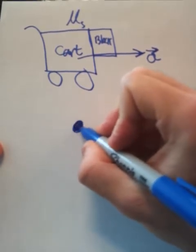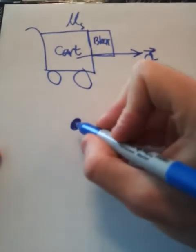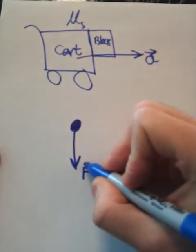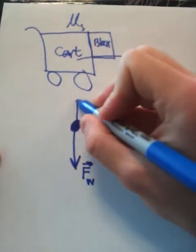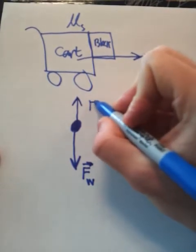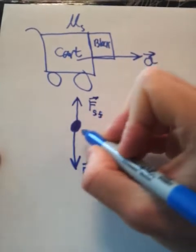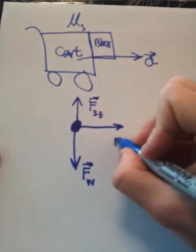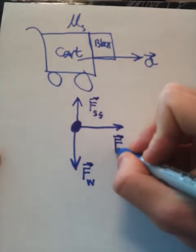This represents the block. As long as we're on a planet, there's going to be a force of gravity — the force of weight of the block. Then there's the force opposing it, keeping the block from falling down, which is the force of static friction. And then there's the applied force, which we'll call F sub a, and we're looking for the acceleration due to that applied force.